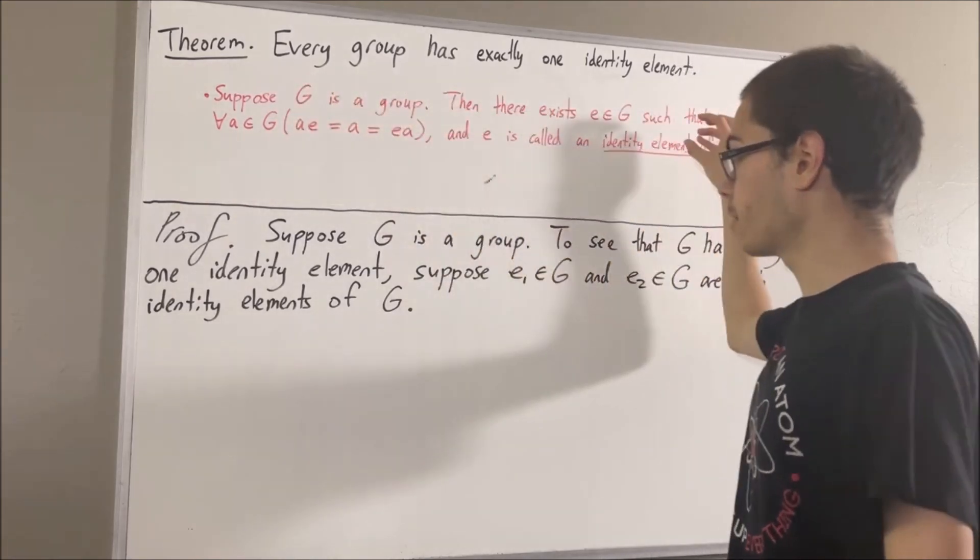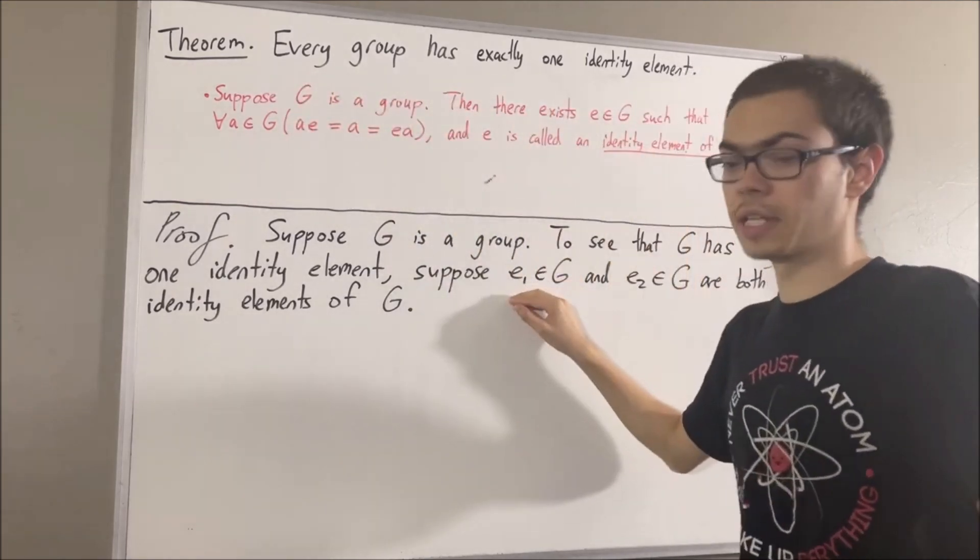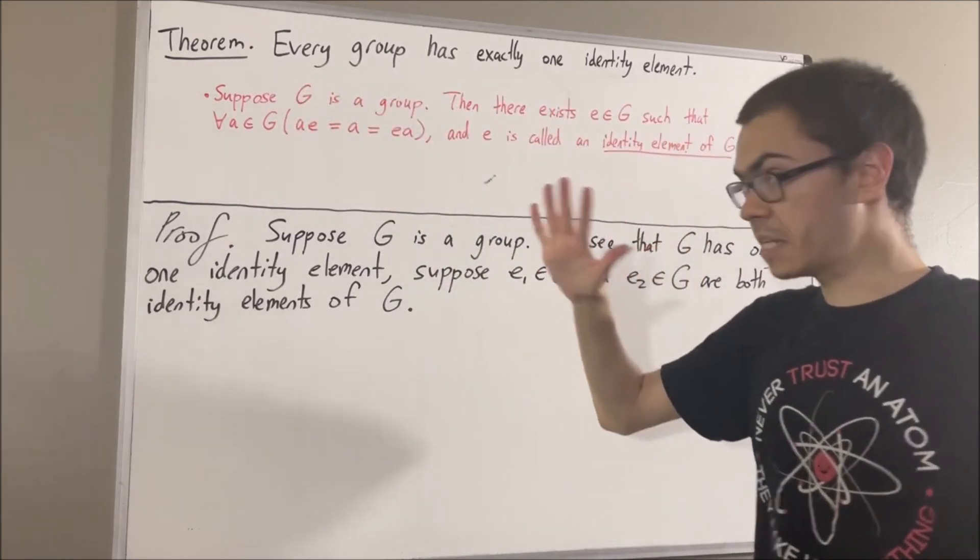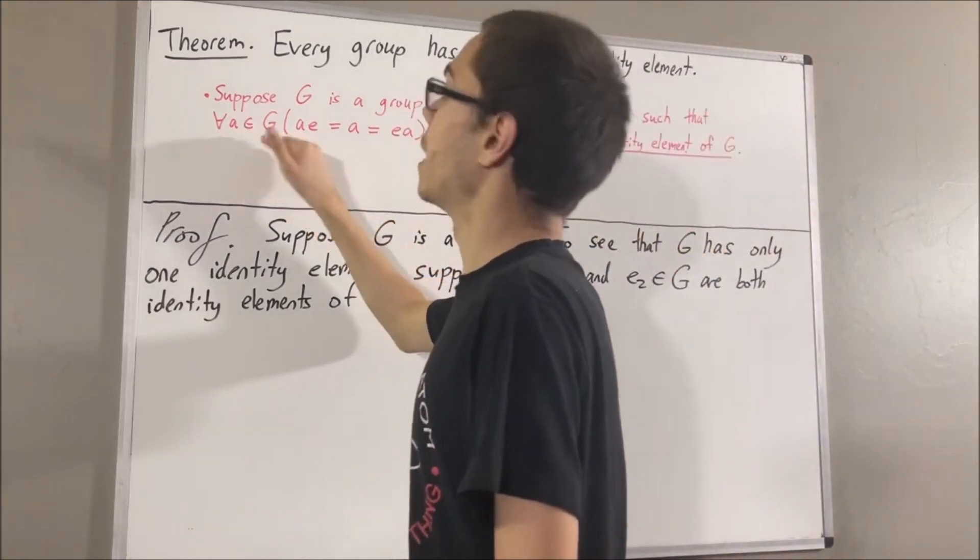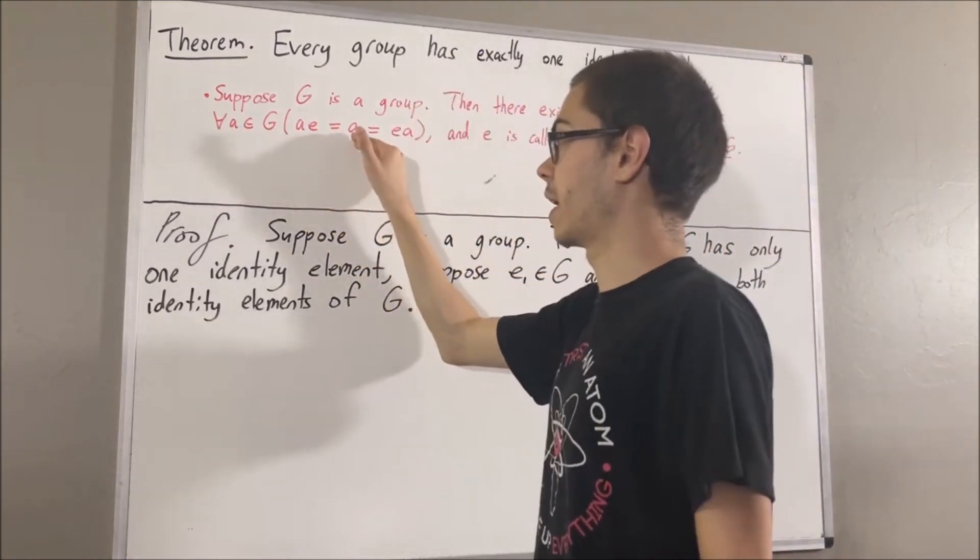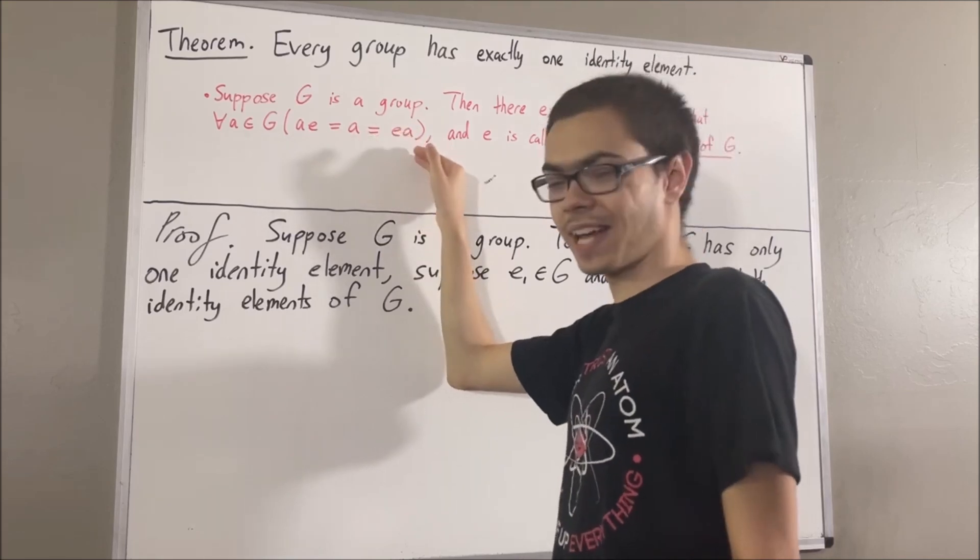Well, from what we have here, to say that e1 is an identity element of G means for all a in G, a times e1 is equal to a, which is equal to e1 times a.